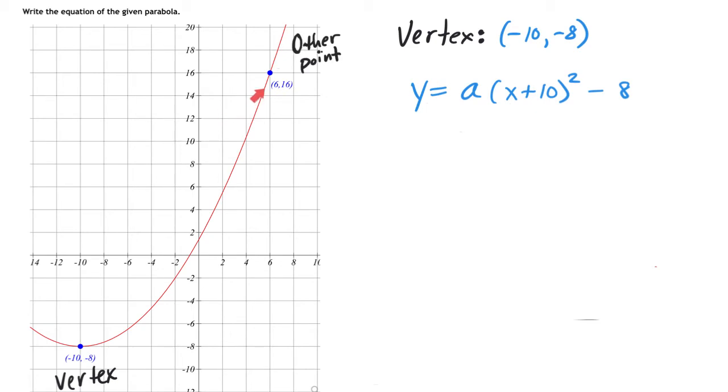Then we have to find another point that it passes through. In this case it passes through the point 6 comma 16. With that in mind, let's write the coordinate down as 6 being your x term and 16 being your y term.